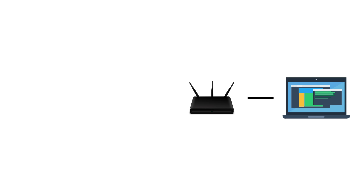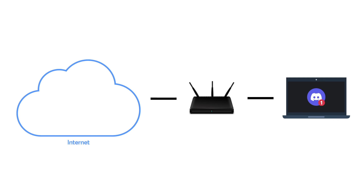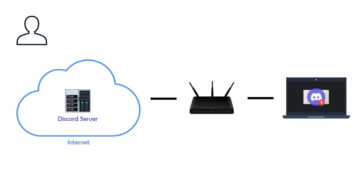Let's say that this is your computer sitting on your home network. It is connected to your home router, which gives you access to the entire internet. Let's say that somebody sends you a message through a messaging service such as Discord. Discord is an example of a centralized messaging service, meaning that after your friend sends you a Discord message, it goes through a centralized Discord server, and then this Discord server dispatches the message to your computer. But how is the message actually routed from the Discord server to your computer?